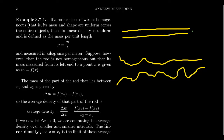But when you have a non-homogeneous rod, measuring density becomes a much more complicated issue. Different segments of the rod can have very different densities, and computing the instantaneous density — the so-called linear density at a specific point — requires calculus.